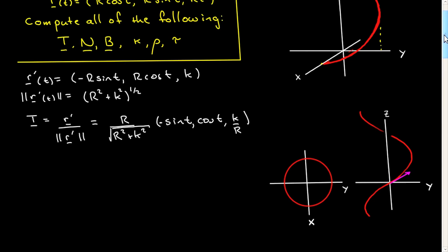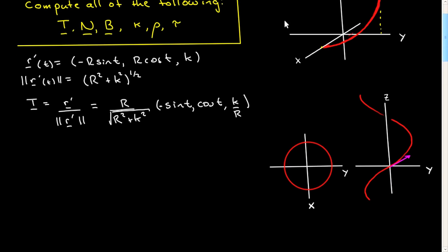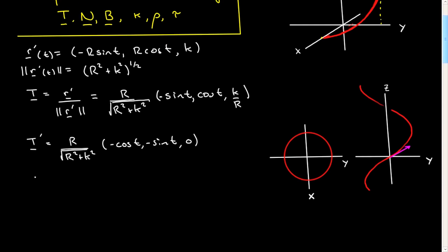Given the tangent vector, we're now going to compute the unit normal vector, and you do that by differentiating this tangent vector. T prime: this will just be a constant, so it's unaffected by differentiation. And minus cosine T, minus sine T, and zero. To get the unit normal vector N, we have to take the derivative of our tangent vector and divide it by its modulus to normalize it.